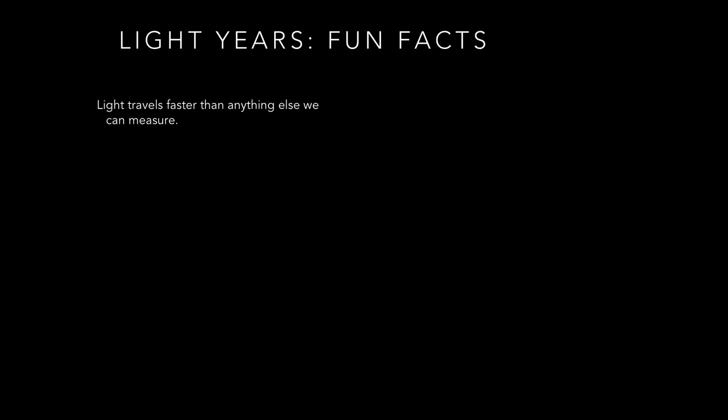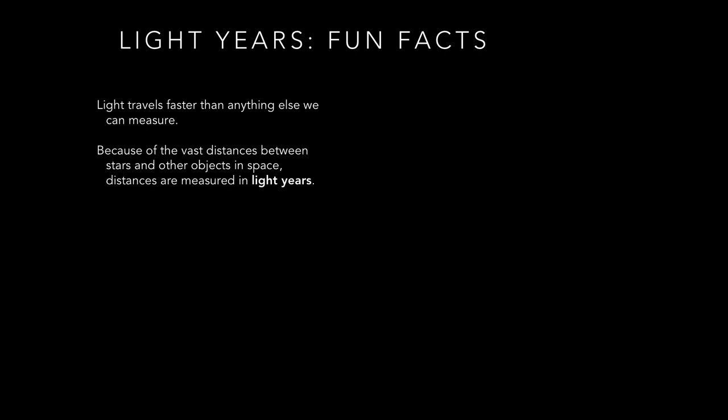We're going to look at some fun facts — it's mainly going to be repetitive because I just already talked about it. Light travels faster than anything else we can measure, and because distances are vast, that's what we choose to use to describe these distances. Light years is a measure of distance, not time — which is a sort of confusion for 8th graders because you have the term 'years' in the description. When we know years, we think of years as time: you're 13 years old, you're 14 years old.